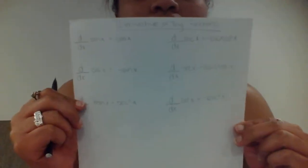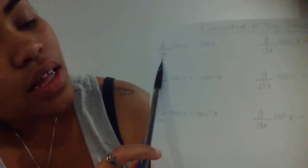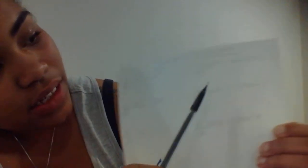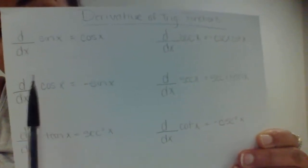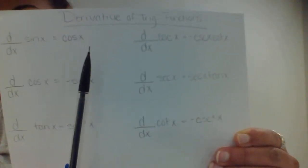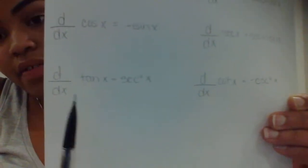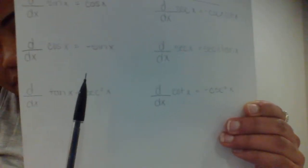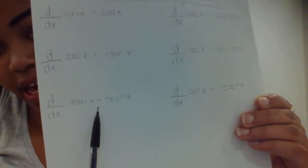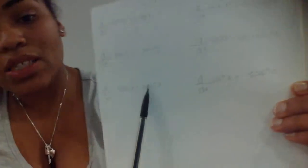Next we have the derivatives of trig functions, which are fairly simple. You have sine, cosine, tangent, cosecant, secant, and cotangent. The derivative of sine of x equals cosine of x. The derivative of cosine of x equals negative sine. The derivative of tangent of x equals secant squared of x.